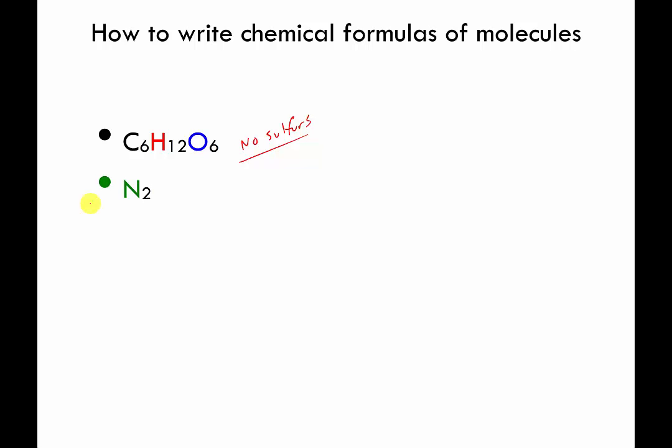Next one. Pretty straightforward. How many nitrogen atoms are in this molecule? Well, there are 2 because there's a subscript of 2 next to the symbol for nitrogen.